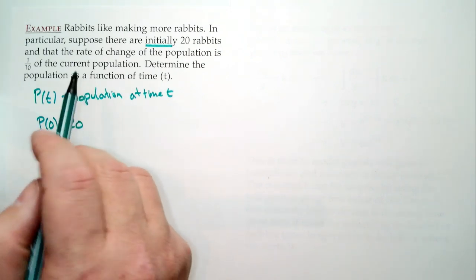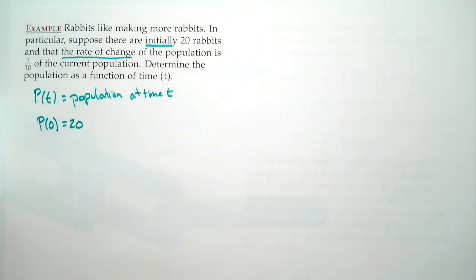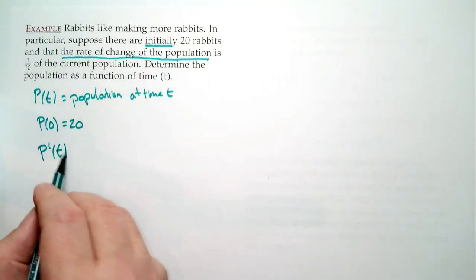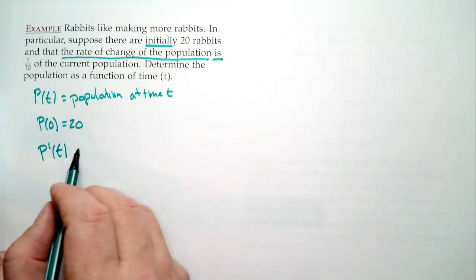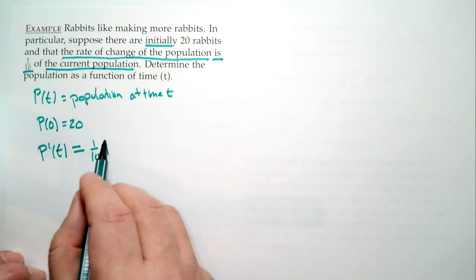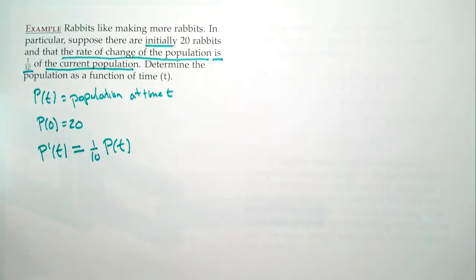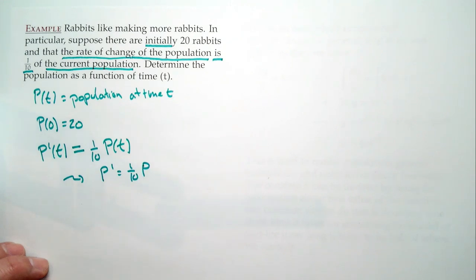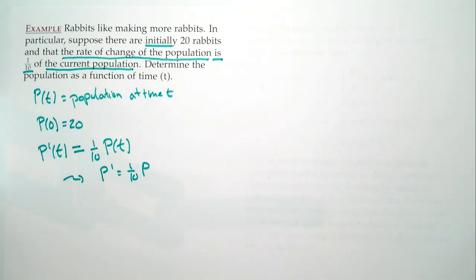The rate of change of the population — when you see 'rate of change,' think derivative. So p'(t) = (1/10)·p(t), or suppressing the t: p' = (1/10)p. That's the differential equation. The rate of change is proportional to how many rabbits there are: a small number of rabbits means not much change, but a large number means many more coming in.